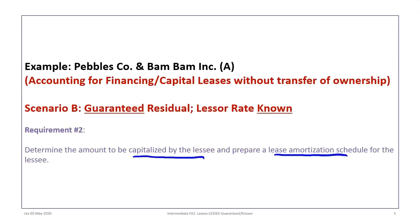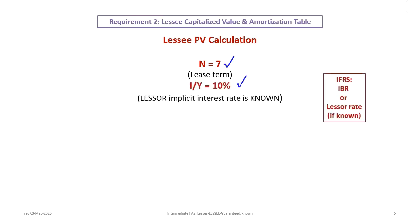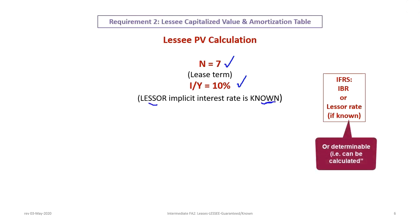The next requirement is to determine the amount to be capitalized by the lessee and prepare a lease amortization schedule. For the lessee PV calculation, we use a lease term of 7 years (N=7). IY is 10% in this case — unlike Tutorial 11a — because the lessor's implicit rate is now known and determinable. Even basic financial calculators can calculate the implicit rate used in the payment calculation.